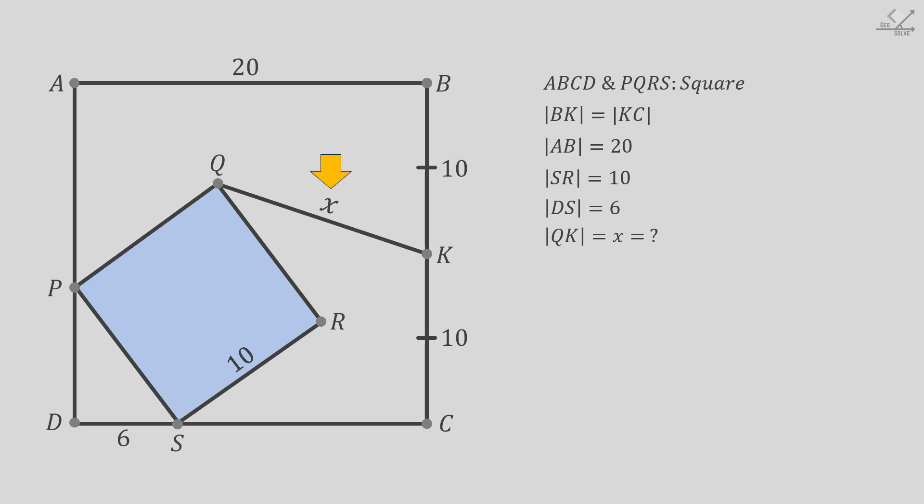We also know the side length of the small square is 10 units, so these other sides must also be 10 units. Now focus on this right angle triangle. We can see that the missing side of this triangle should be 8 units. We know the large square has 20 unit sides, so this part must be 12 units.